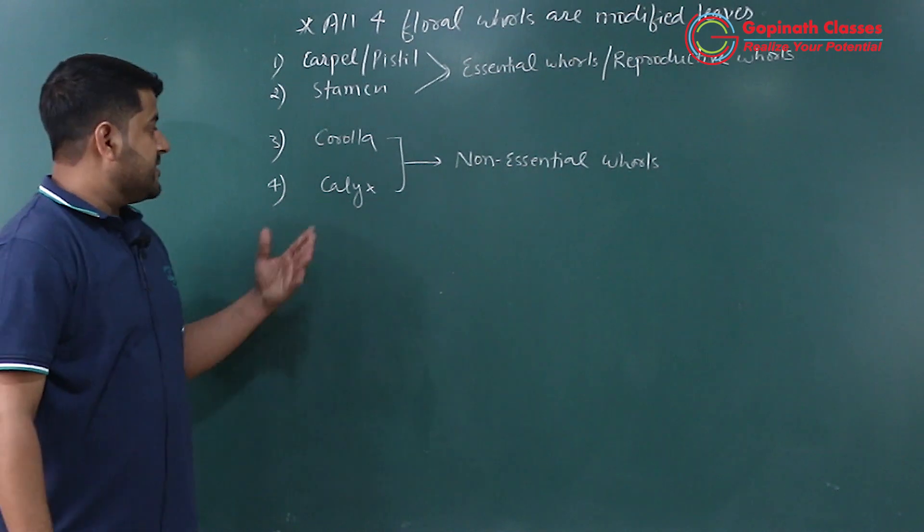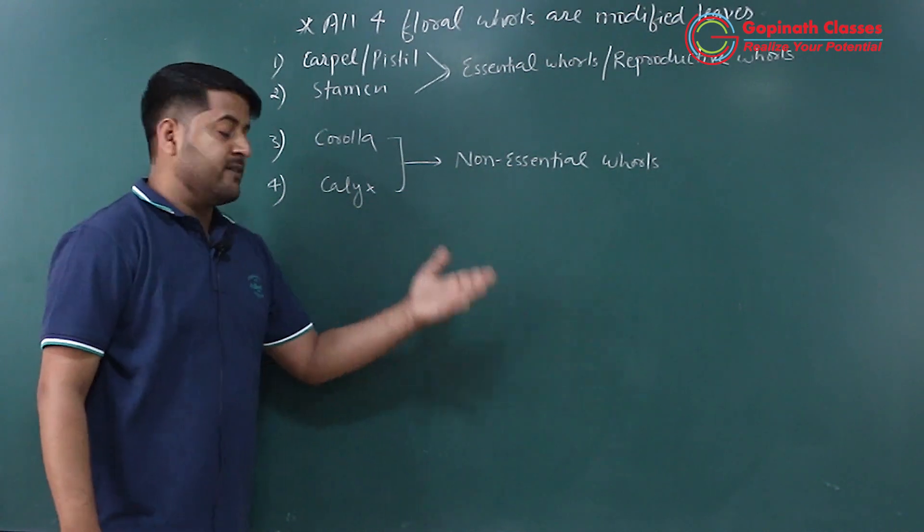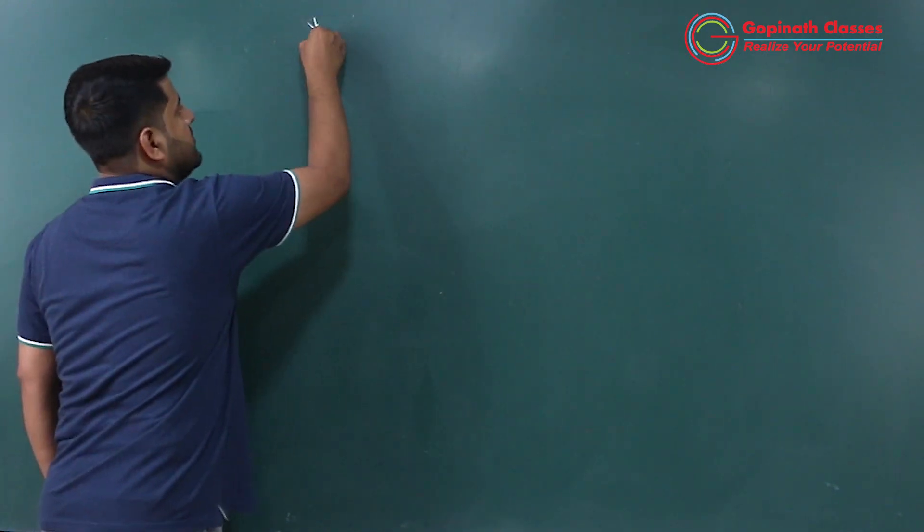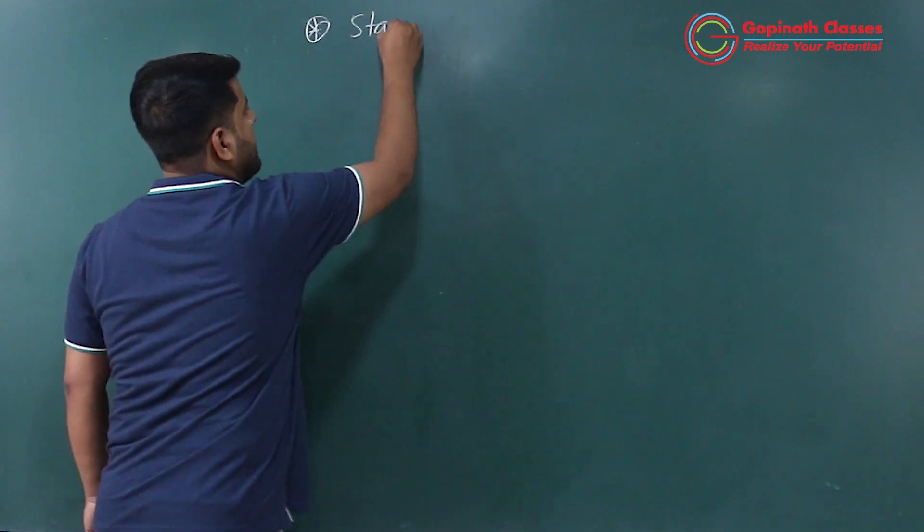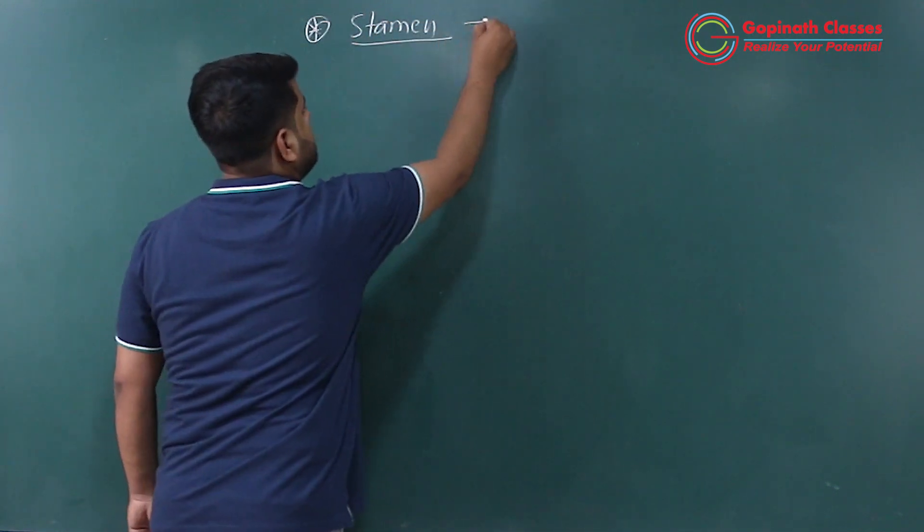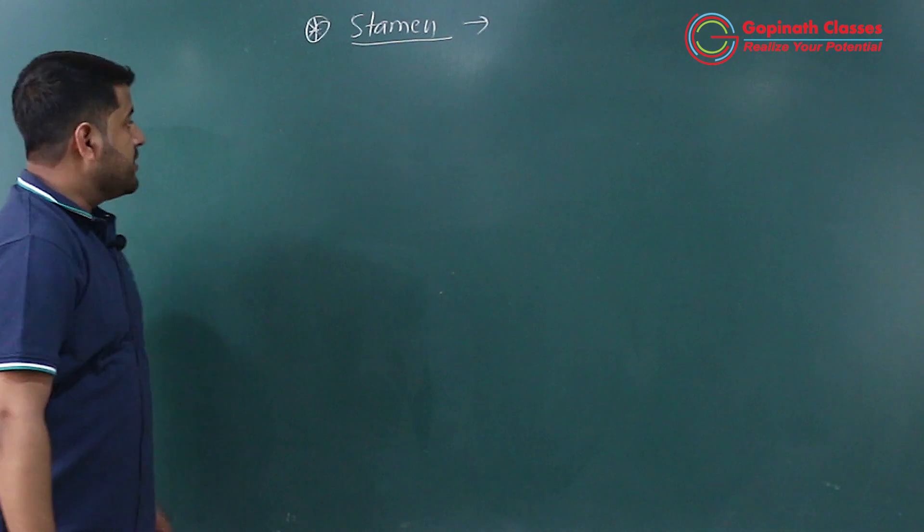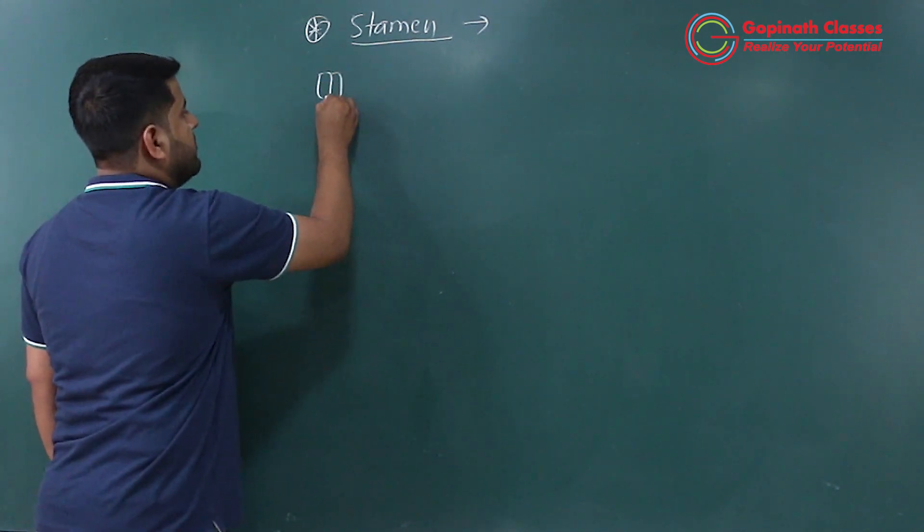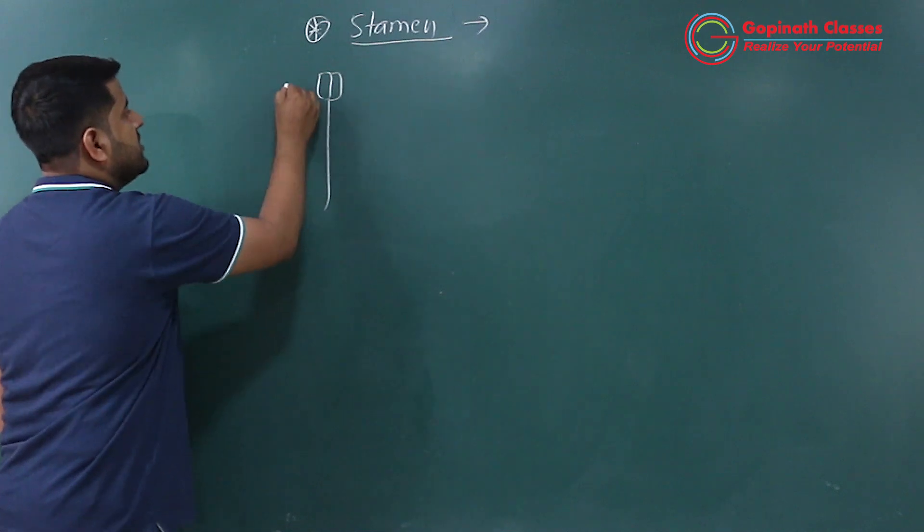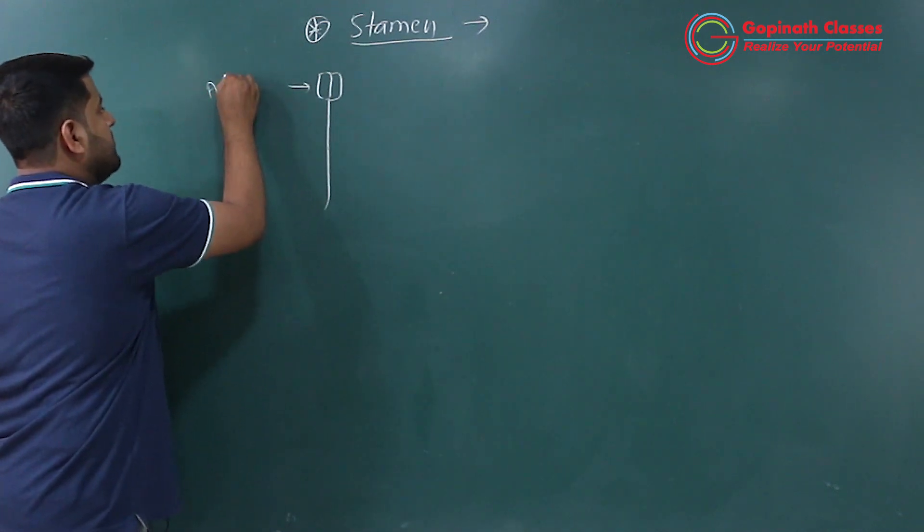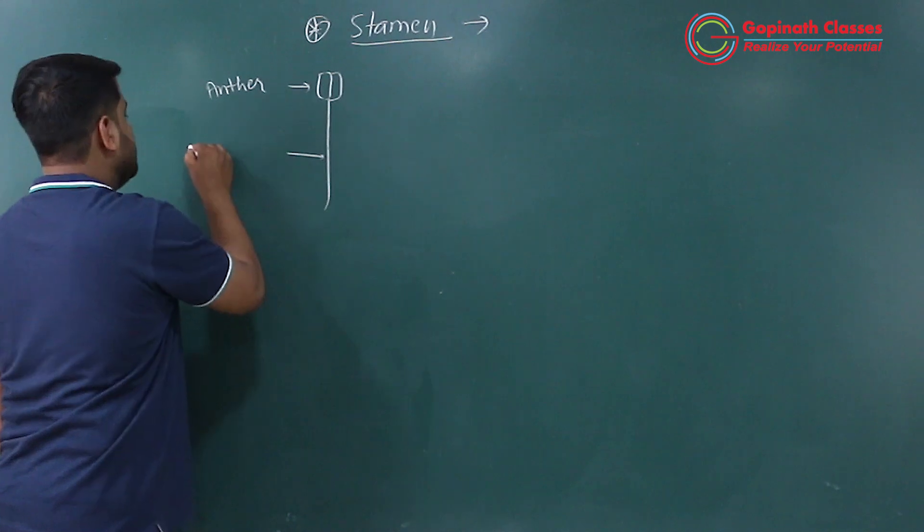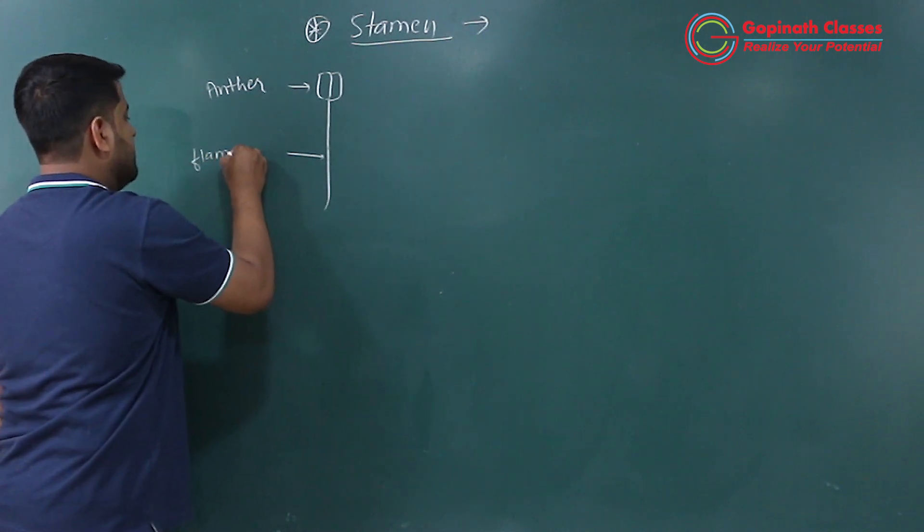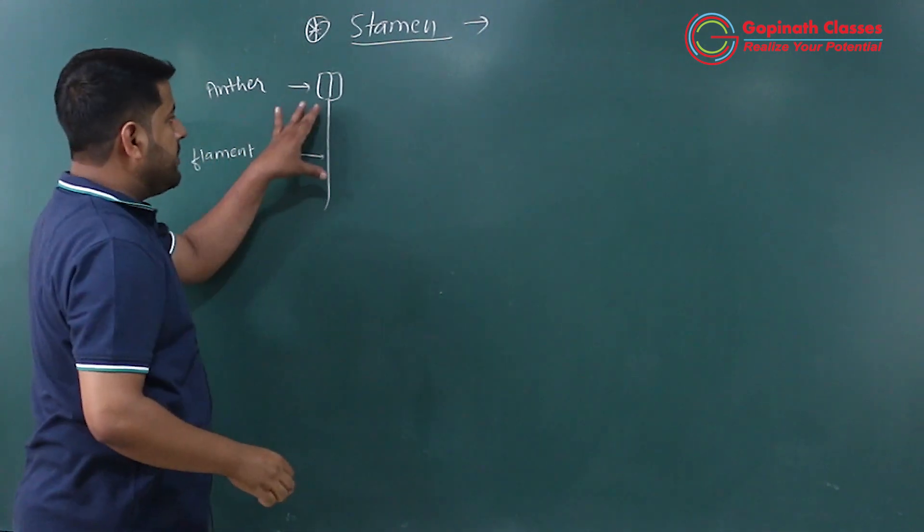Now let's start with stamen. Stamen is the main reproductive part of the flower. There are two parts: this part is anther and this part is filament.